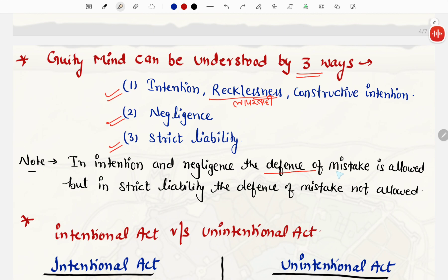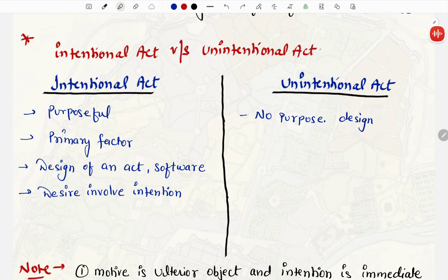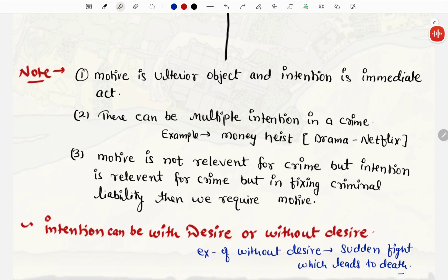In intention and negligence, the defense of mistake is allowed. But in strict liability, the defense of mistake is not allowed. Defense of mistake ka matlab kya hua? In strict liability, just like food adulteration act, kuch bhi milawat karna, you can not say that whether you know about this act or not.